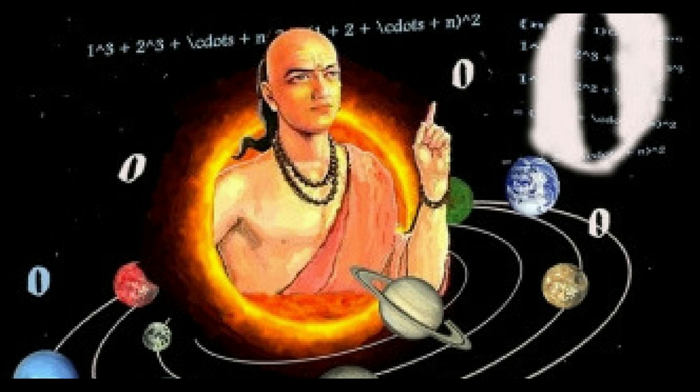He also described the motion of solar system, details of eclipses, sidereal rotation periods and heliocentrism. He was the first person to establish that Earth and other planets in the solar system have their own axis and they rotate around their axis and revolve around the sun.